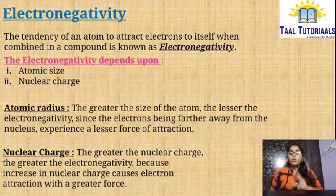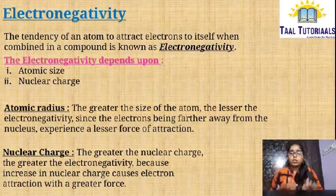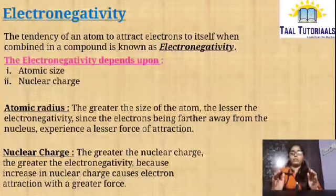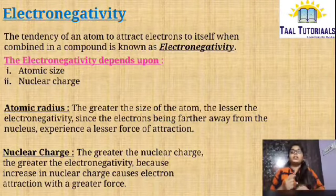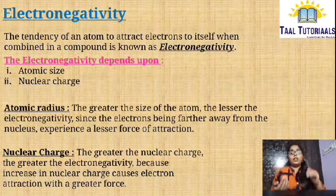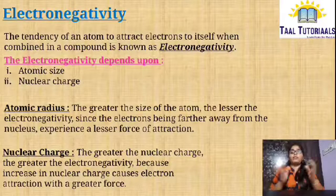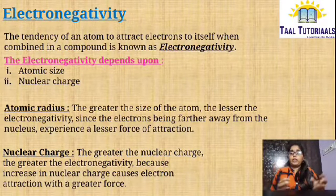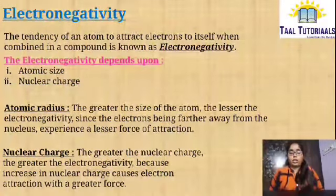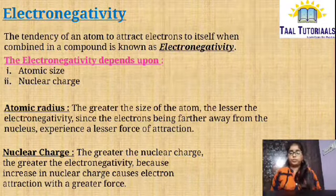Electronegativity depends upon two things: atomic size and nuclear charge. Regarding atomic radius — the greater the size of the atom, the lesser the electronegativity. They are inversely proportional: if atomic radius is increasing, electronegativity decreases, or vice versa. Since electrons are farther away from the nucleus, they experience a lesser force of attraction between the nucleus and the outermost electron.